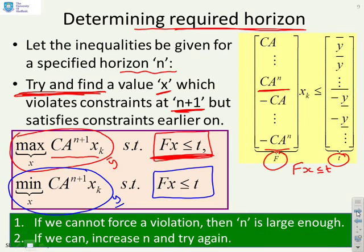So what's the key point? If I cannot, that's the key word, if I cannot force a violation, then n is large enough. It says as long as I satisfy constraints over the first n samples, I cannot violate thereafter. If I can force a violation, then this n is not big enough, so I need to make n bigger and try the same test. And that's basically the nub of the algorithm proposed by Gilbert.